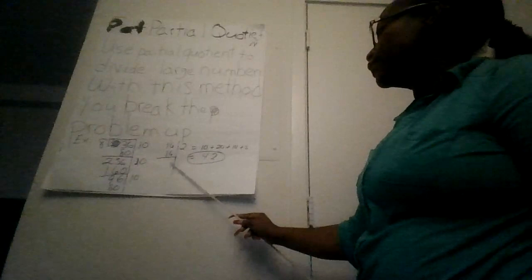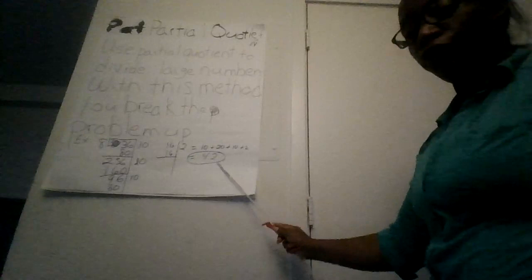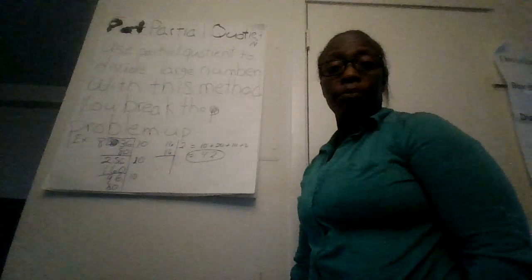You still have these numbers on the side. In sequence, 2 times 8 is 16, making the remainder 0. Combine 10, 20, 10, and 2 together for an answer of 42. That's the partial quotient strategy.